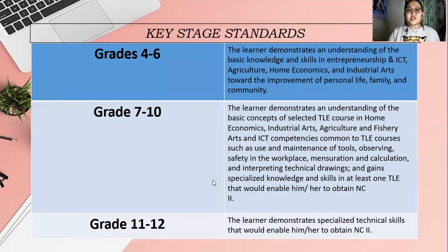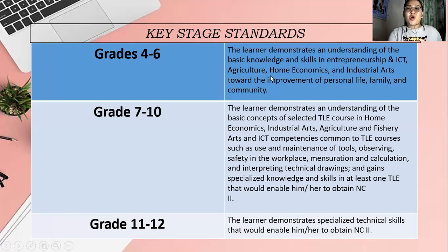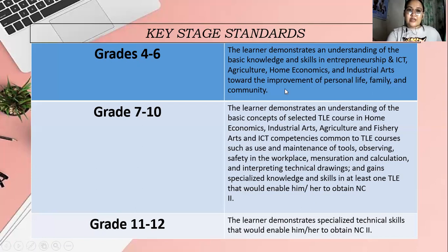Key stage standards: From grades 4 to 6, the learner demonstrates an understanding of the basic knowledge and skills in entrepreneurship and ICT, agriculture, home economics, and industrial arts, toward improvement of personal life, family, and community. From grades 4 to 6, this is just basic knowledge for those areas of TLE — it is an exploratory stage for our learners.